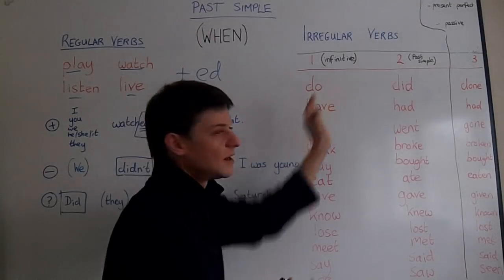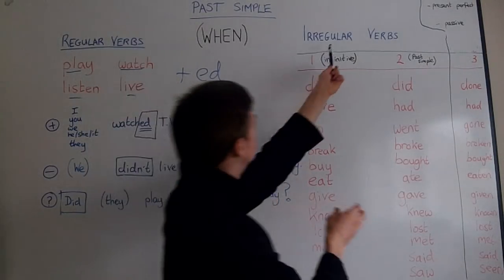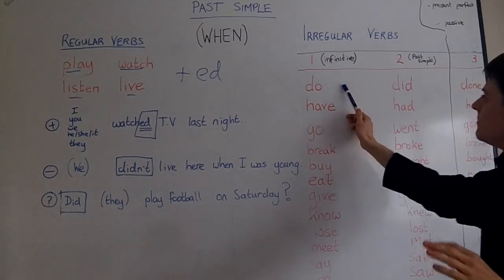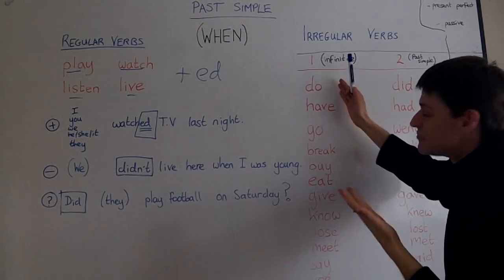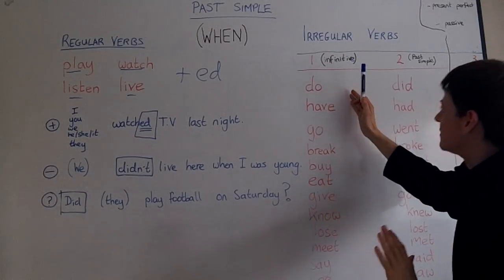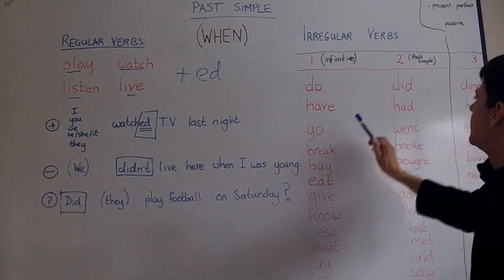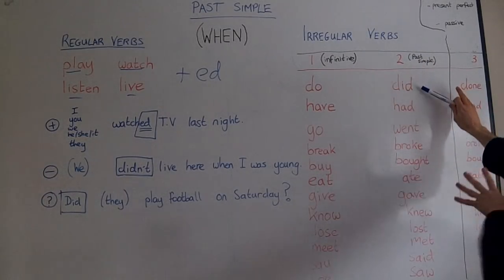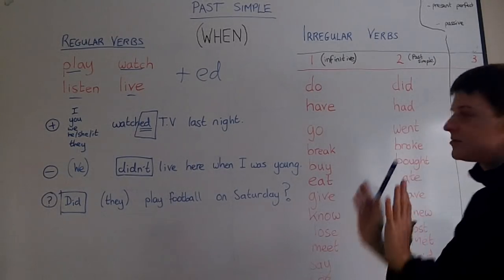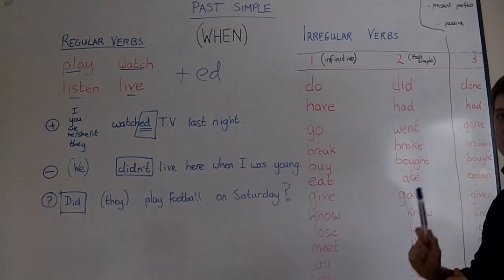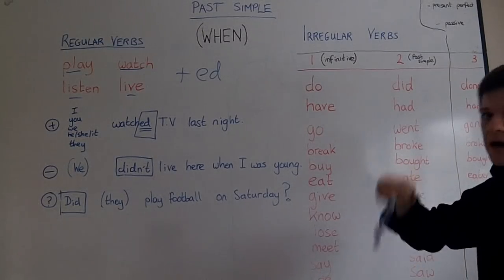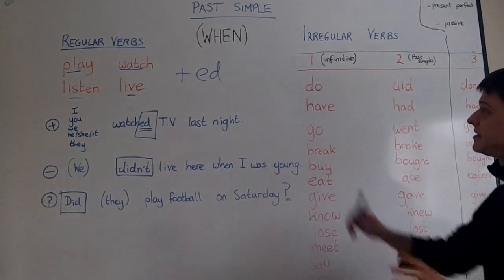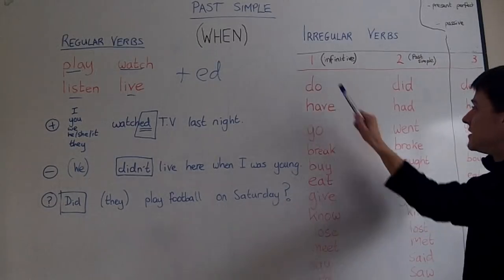Past simple with irregular verbs is more difficult. For irregular verbs, we don't add ED. We have a first form, which is like present simple or the infinitive — with I and you, but not with he and she. We have a second form, which is the past form. I'm sorry if you can't see these very clearly, but you need to follow the link under the video and you can find a big list for irregular verbs. You just have to learn irregular verbs.